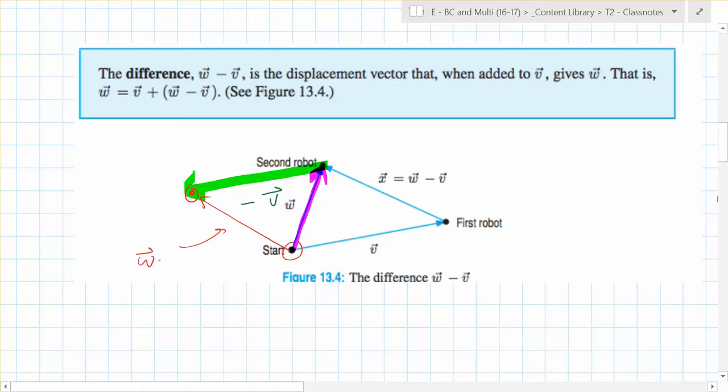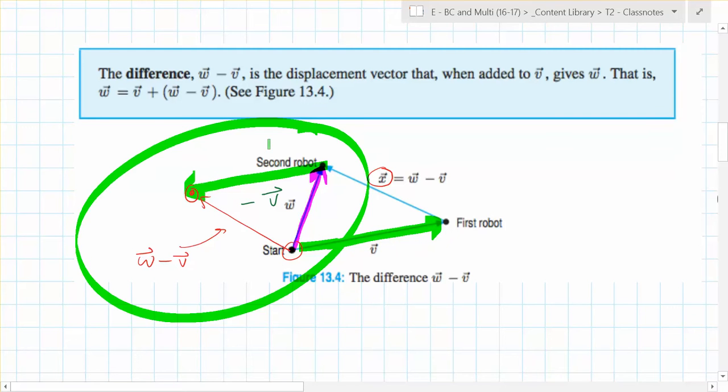So what vector is this? That is w minus v. That is x. Another way to do that is to draw them with the same initial point and then go from the end of v to the end of w. I like thinking about it this way, bringing it back to addition.